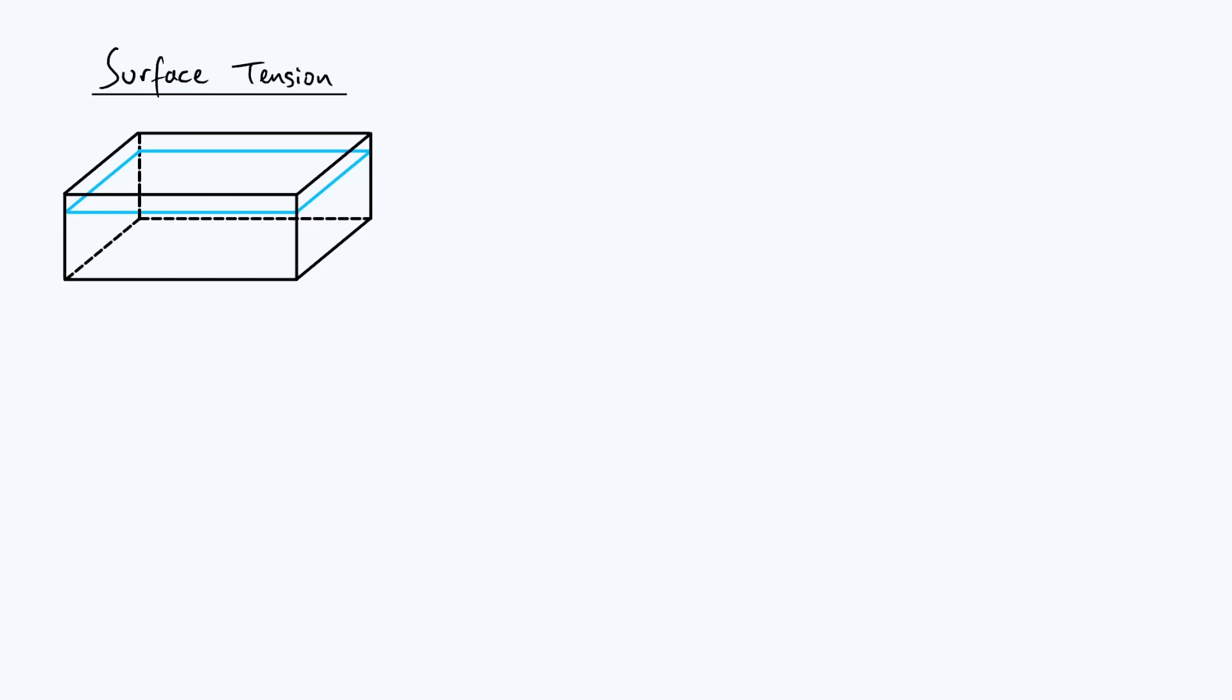We'll start by talking about the definition of surface tension in terms of forces and why it's defined that way. Then we'll think about how surface tension relates to energy, and finally we'll talk about how surface tension is responsible for liquid droplets taking on spherical shapes.